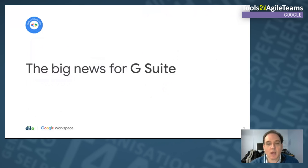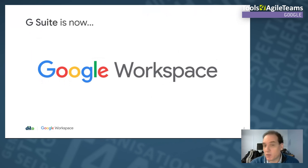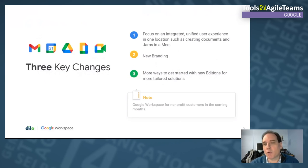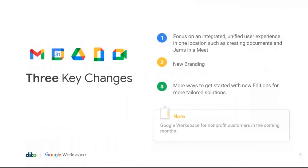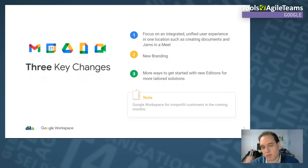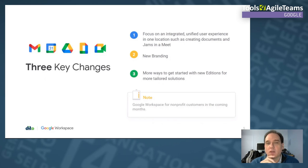The big news starting around October 7th or 8th: G Suite is now Workspace. There were three big changes — new logos for Gmail, Calendar, Drive, Keep, and Meet; a unified user experience with Chat and Meet now built into Gmail on the left-hand side; and new branding with more tailored solutions including Essentials, Startup, Basic, and Business tiers. By year end it should roll out even for nonprofit customers.